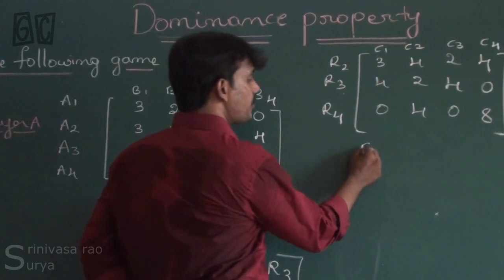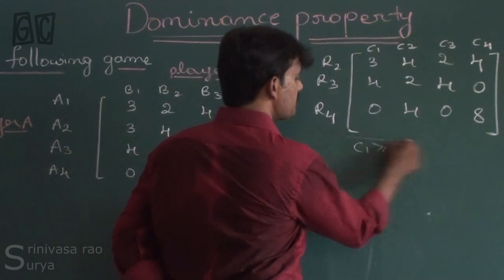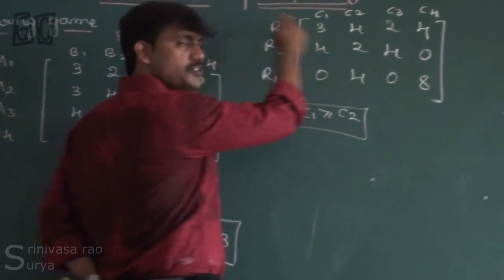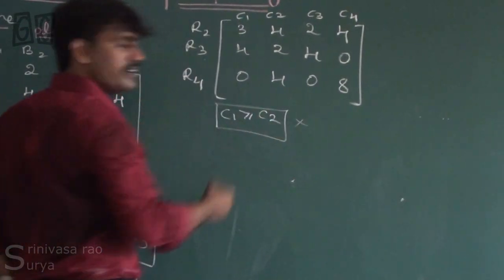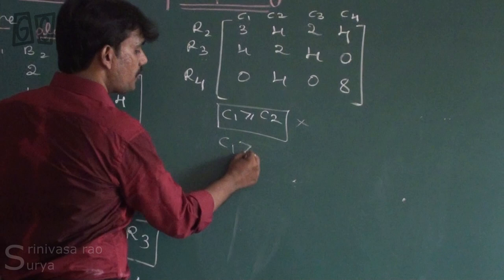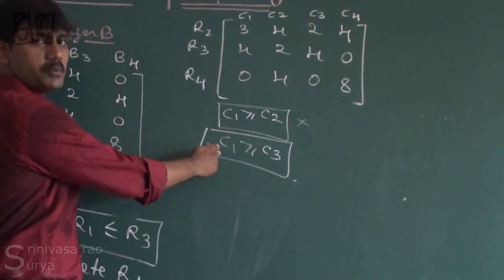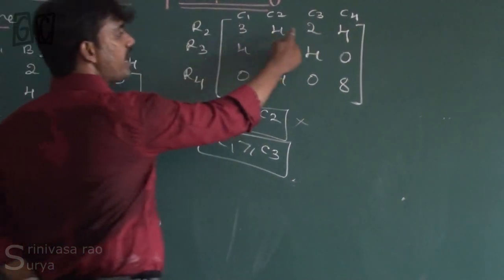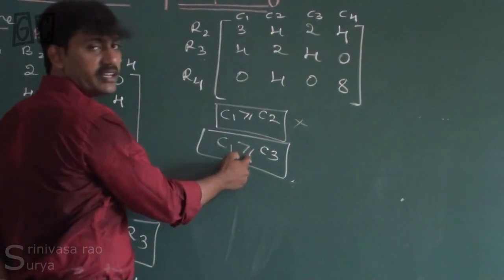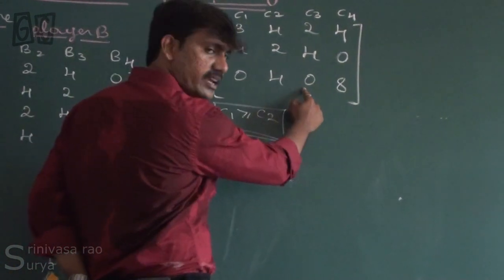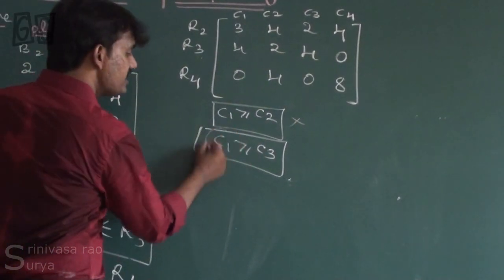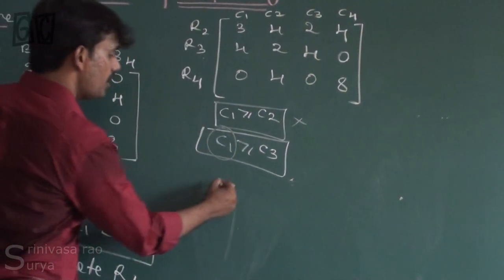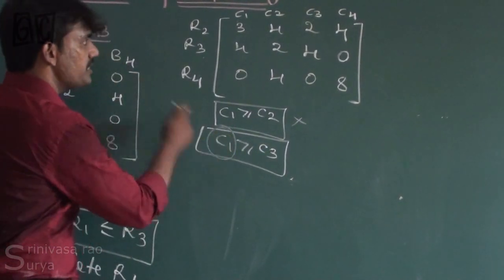Now checking column comparison: C1 ≥ C2? — 3 is not greater than 4, so this fails. Next, C1 ≥ C3? — 3 is greater than 2, 4 equals 4, and 0 equals 0. So C1 ≥ C3 is satisfied. Therefore we delete column C1.